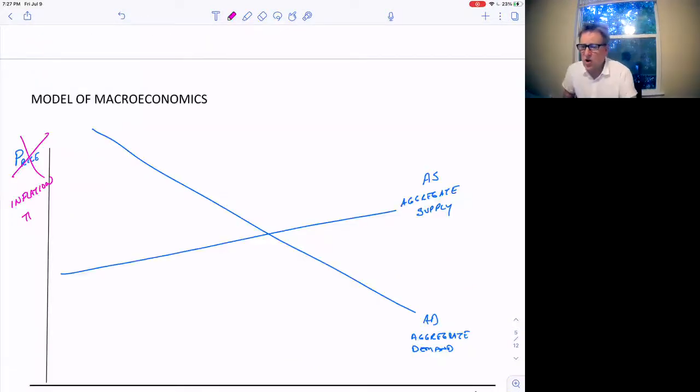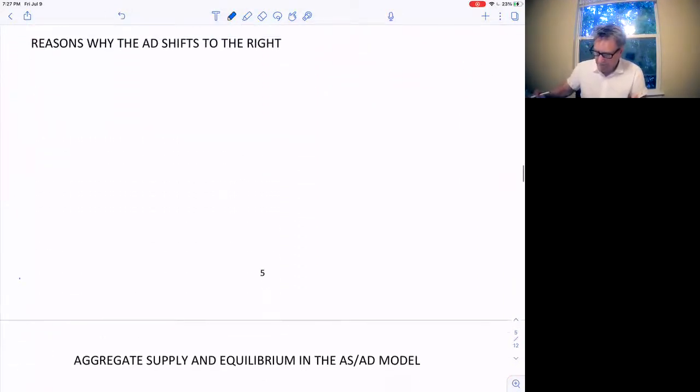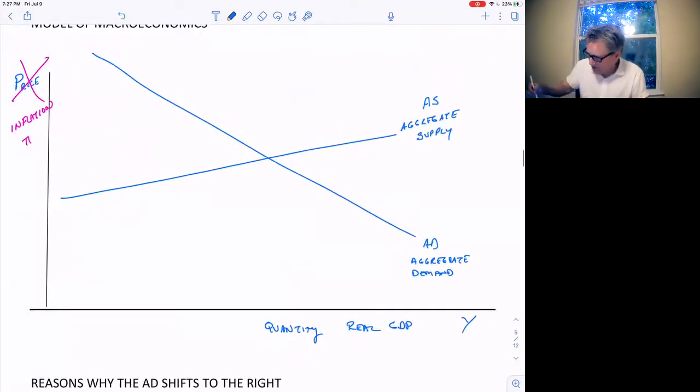So now, just like a normal demand curve, this aggregate demand curve is downward sloping. And if the inflation rate changes, then that changes the quantity demanded. So what's going to make this shift? We know here that if inflation changes, it causes a movement on the demand curve. What's going to make this shift? What's going to make this whole demand curve shift to the right?